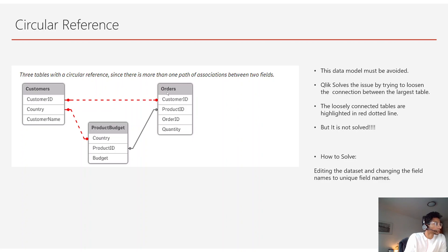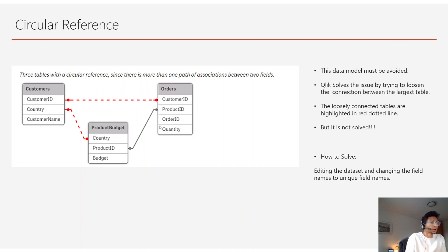What does Qlik do to solve this? It loosens one connection, denoted by red dotted lines — meaning the association exists but is weakened just so the data model can load. This is not okay. Just because Qlik loads the model doesn't mean it's correct — something is wrong and you need to fix it. Qlik decides to loosen the largest table because it has the most rows and would cause the most issues with associations.